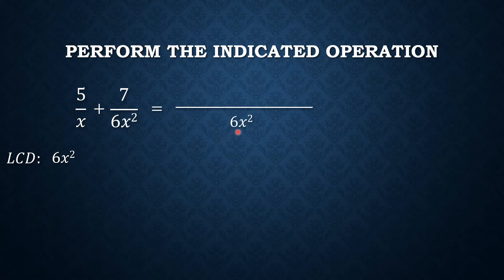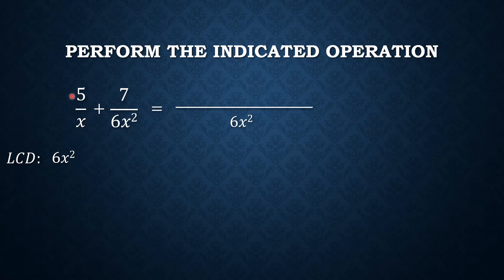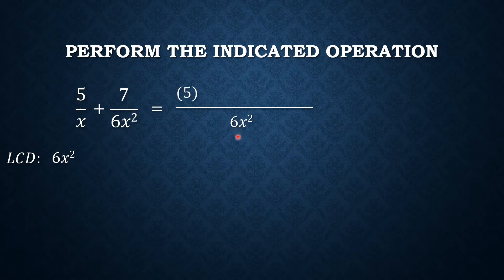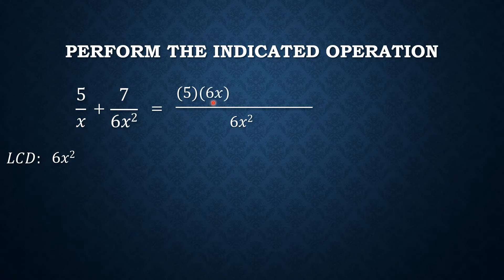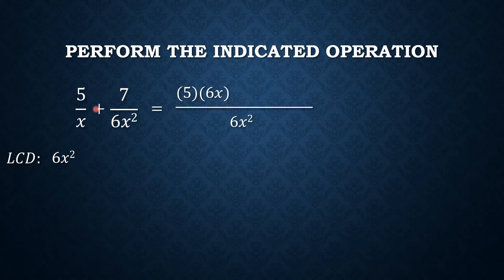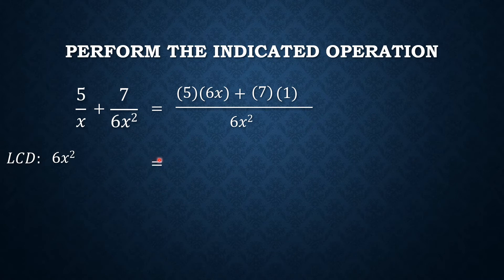Now, let's divide the LCD by the denominator of each rational expression then multiply to their numerators so that the two rational expressions become similar. So we have 6x squared divided by x and that is 6x times the numerator which is 5 plus, the numerator 7 times 6x squared divided by 6x squared is 1. Now let's simplify the numerator.